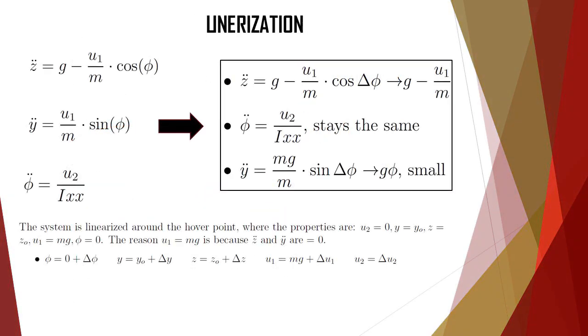Since the system is non-linear because we have sine functions and cosine functions for phi, also U1 is coupled for both y and z. We need to perform a linearization. The system is linearized around the hover point because that will be the most stable point.